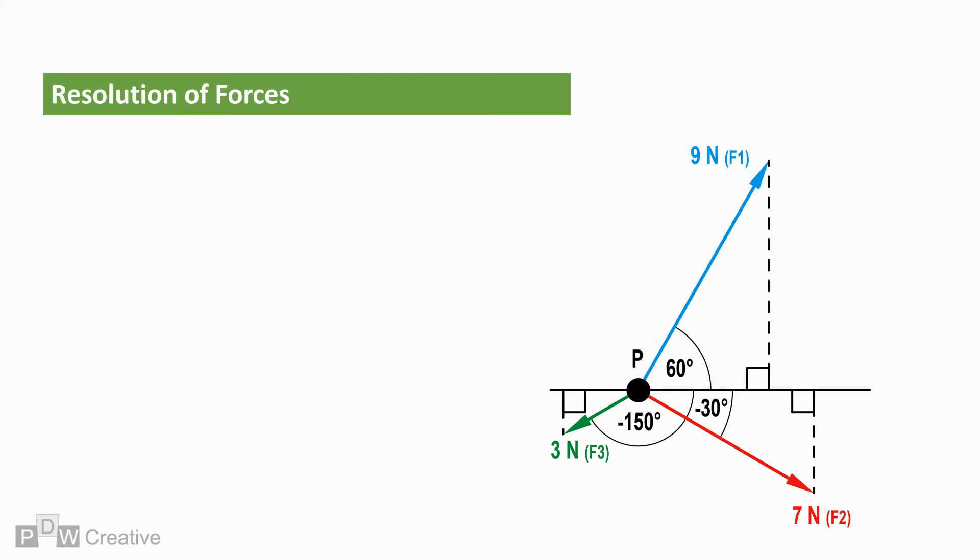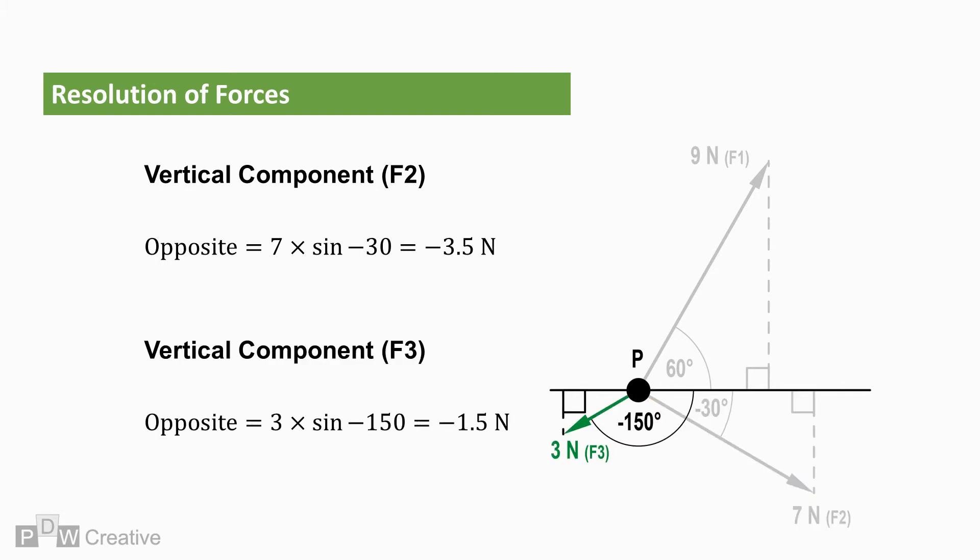We now need the missing vertical components. Both F2 and F3 are acting beneath the horizontal line of the point, so the vertical components will be negative. The sine equation of the vertical component of F2 gives a force of minus 3.5 newtons, whereas the equation for F3 generates a vertical component of minus 1.5 newtons.